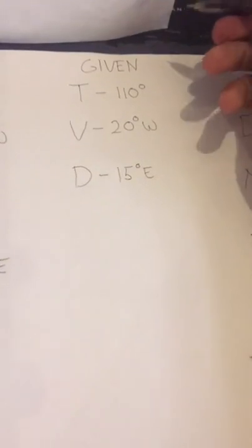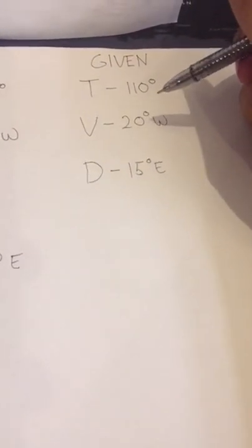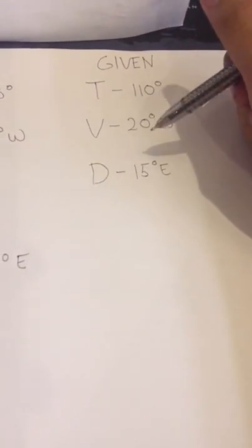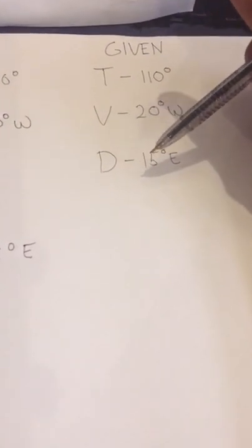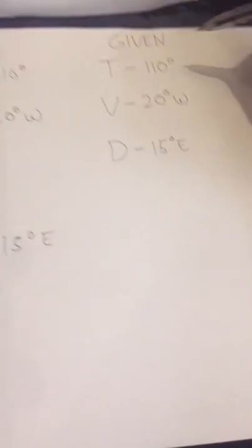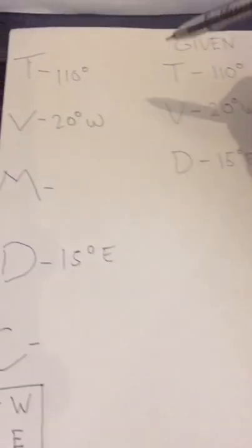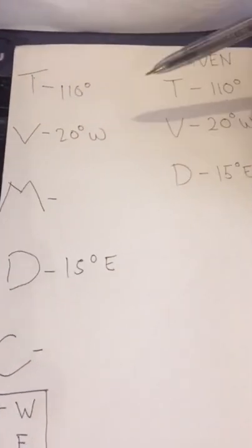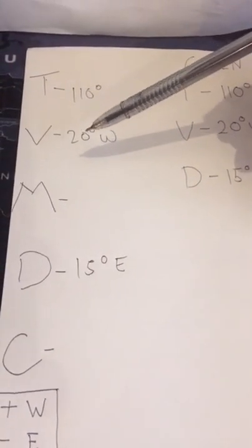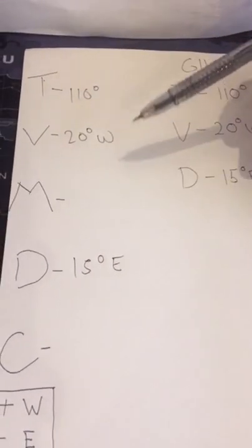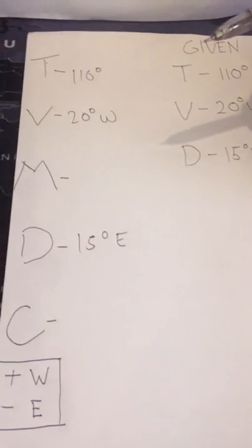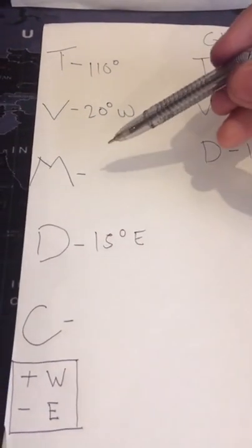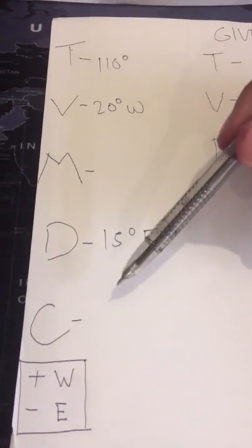We have here given: our true course is 110 degrees, our variation is 20 degrees west, and our deviation is 15 degrees east. We simply copy them to this side. So, we need to find magnetic course and compass.